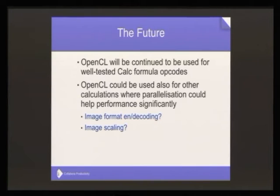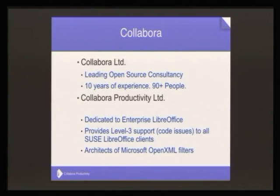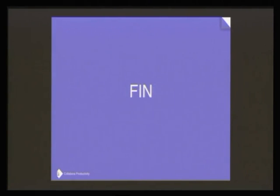And now we come to the title of the talk, which is very short: as far as I can see, we can continue to use OpenCL as we use it now, and we could also use it for some other calculations not related to formulas in Calc. Those that have come to mind first would be image format encoding and decoding, and image scaling — we currently use OpenGL for that, but OpenCL might be a better fit. And yes, there is collaboration — and that's it. Thank you.